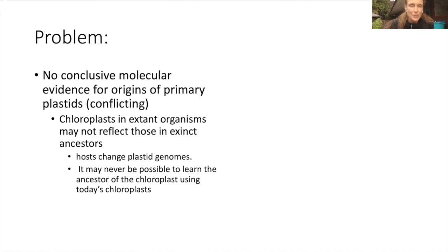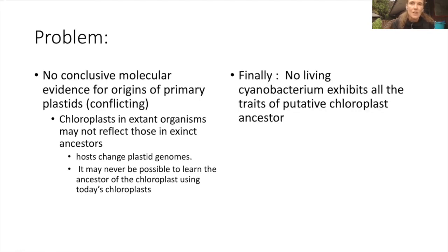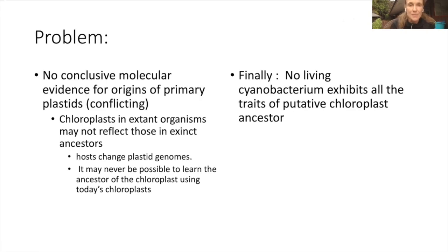We can only study what's alive now. But here's what we do know: no living cyanobacterium exhibits all of the traits of the putative chloroplast ancestor. It has some of them and shares genes with them, but it doesn't have all the traits. So whatever that original organism was, it was cyanobacterial-like, but it wasn't the cyanobacterium that's still alive today.